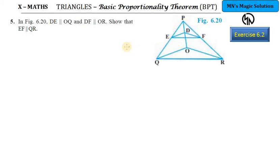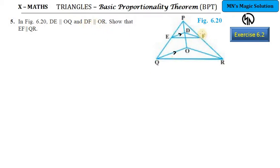Hi students, again it is the triangles topic, Exercise 6.2, Question number 5. They have given you a diagram and they say DE is parallel to OQ and DF is parallel to OR.